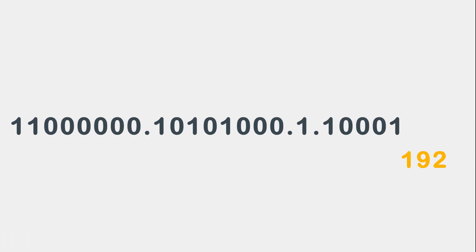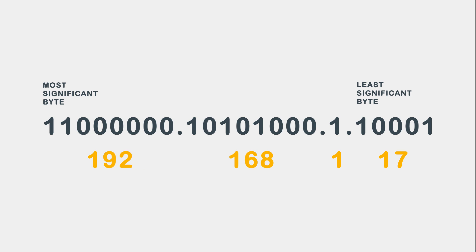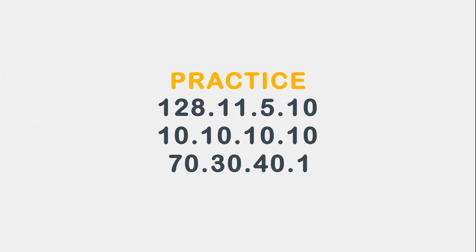All together, working from the most significant byte to the least significant byte, we get 11 followed by six zeros, and then 1 0 1 0 1 0 0 0 1 1 0 0 0 1. The periods are used as placeholders for humans, as the computer does not see them. Take the time to practice with these IP addresses.